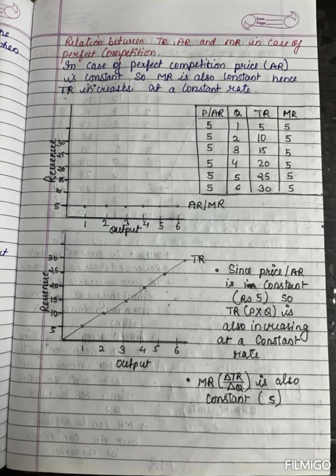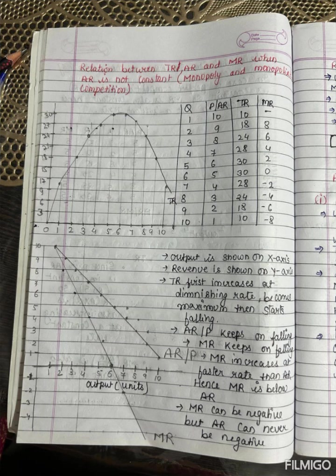Average revenue is total revenue divided by quantity. In case of perfect competition, total revenue increases at a constant rate, because of which average revenue and marginal revenue are constant and parallel to the x-axis.